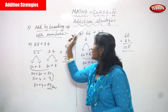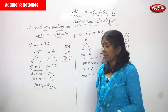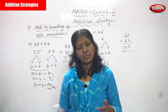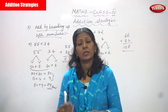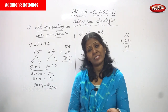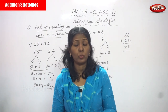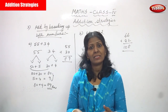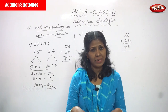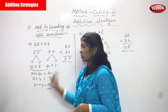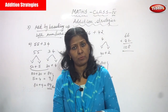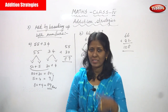Now we are going to see the same addition strategies, but add by breaking up both numbers. We have seen in the last strategies: the first strategy is to break up only one number, whether it is the first number or second number — that is left up to your choice. The second strategy is add by counting tens. Now we are going to see the third strategy: add by breaking up both numbers. The first question is 55 plus 34.